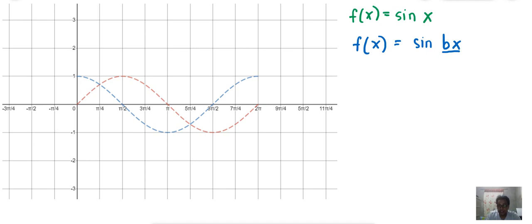So there is a transformation on the period of the graph. Ibig sabihin nito, hindi na 2π yung isang buong cycle, hindi na 2π yung graph. So let us consider an example.